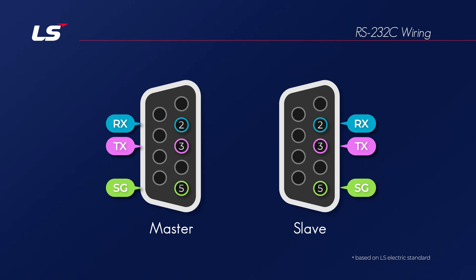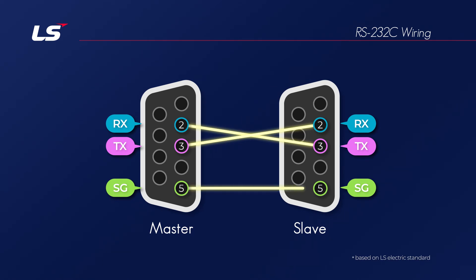When the request message is transmitted from the master PLC to the slave device, the master's TX must be connected to the external device's RX acting as a slave. The slave's response message comes from the slave's TX and needs to be connected to the master's RX, so pins 2 and 3 must be cross-connected. In addition, the SG ground for signal must be connected between devices.